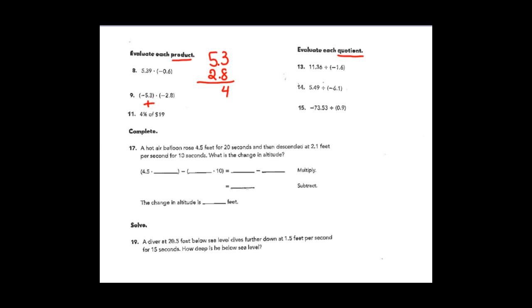Five and three tenths times two and eight tenths: eight times three is twenty-four, carry the two; eight times five is forty and two makes forty-two. Put down a zero to hold place value. Two times three is six; two times five is ten. Four and zero makes four; two and six makes eight; four and zero makes four. Now I have two decimal places — one in each multiplicand — so in the product the answer has two decimal places. My answer is positive fourteen and 84 hundredths.